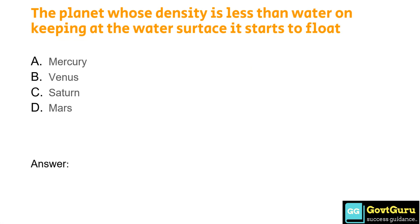The planet whose density is less than water — on keeping it at the water's surface it starts to float — is: Option A: Mercury, Option B: Venus, Option C: Saturn, Option D: Mars. The answer is Option C, Saturn.